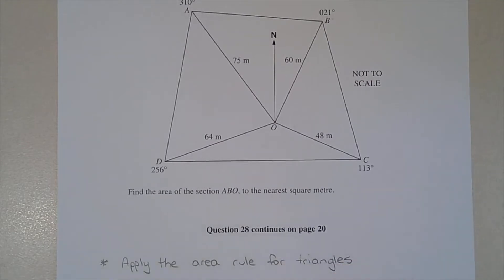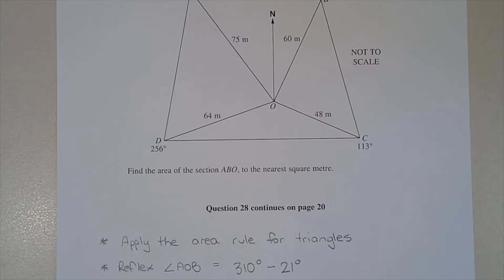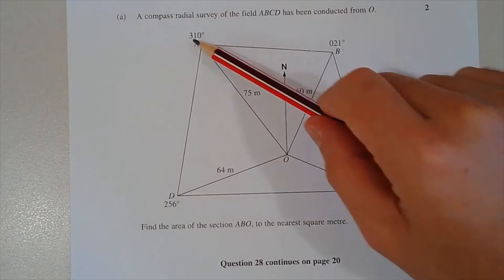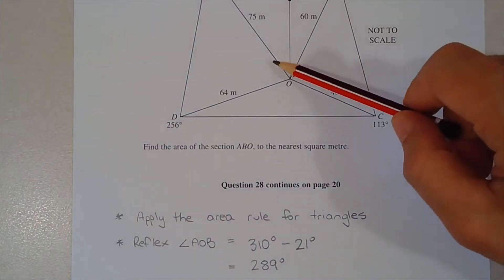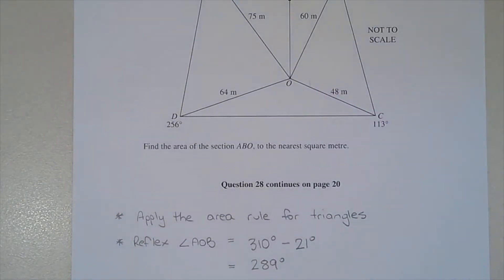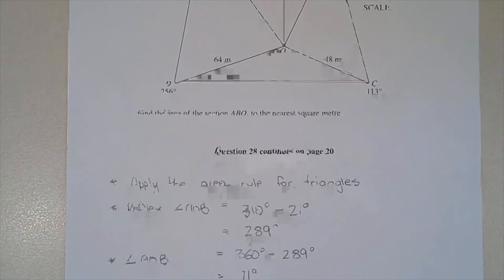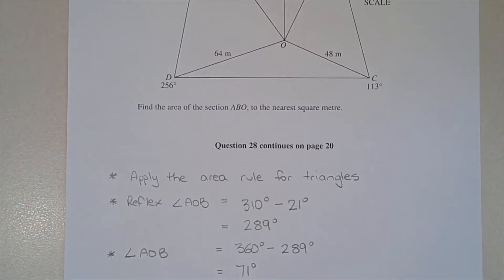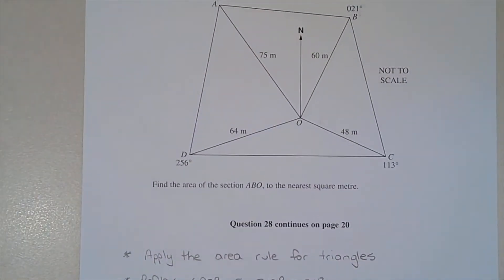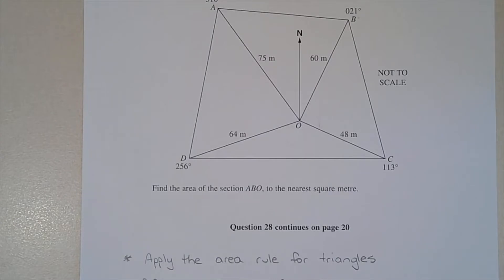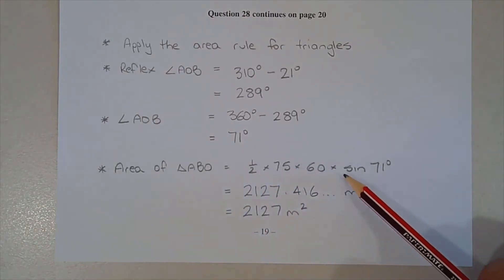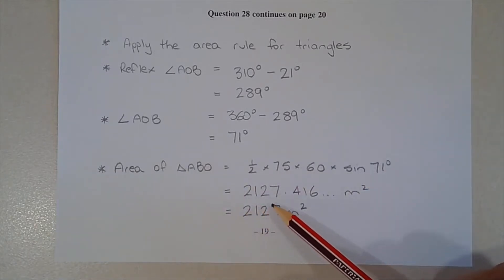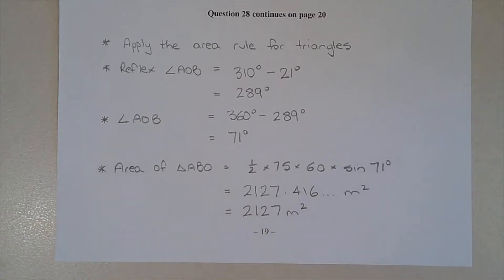Applying the area rule: area of triangle ABO = ½ × 75 × 60 × sin 71° = 2127.416... square metres. To the nearest square metre, the area is 2127 square metres.